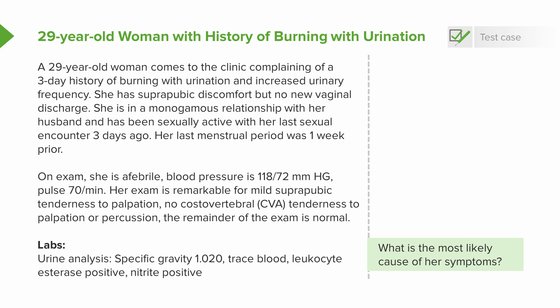On exam, she's afebrile. Her blood pressure is 118 over 72, pulse is 70. Her exam is relatively unremarkable except for mild suprapubic tenderness to palpation, but no costovertebral angle (CVA) tenderness to palpation or percussion. The remainder of the exam is normal.